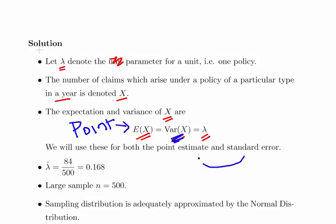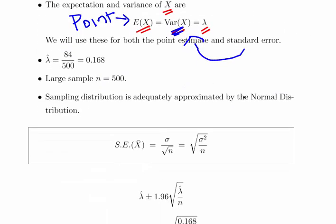Our point estimate here for one policy is 0.168. We had 84 cases out of 500, so 84 divided by 500 gives us 0.168.